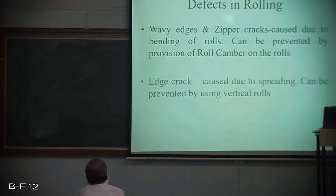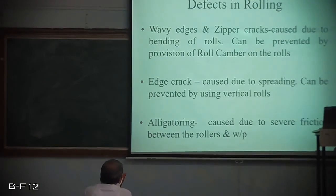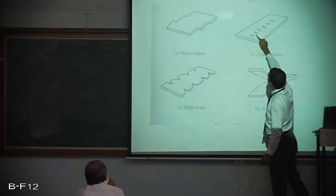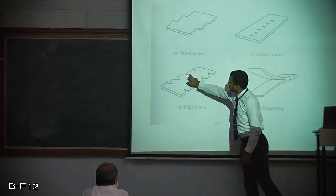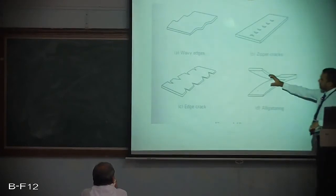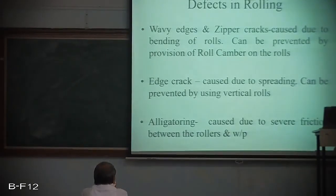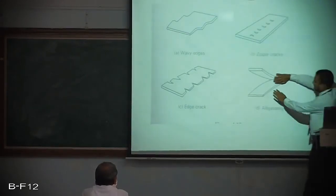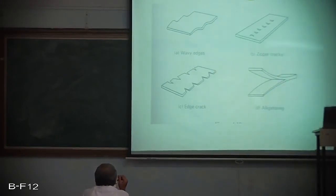Defects in rolling include wavy edges and zipper cracks caused due to bending of rolls. Zipper cracks appear at the center similar to a zip pattern. Edge cracking is also seen, caused due to spreading and can be prevented using vertical rolls. Alligatoring occurs due to severe friction between rollers and workpieces, causing the material to stick to the rollers and open up at the center, somewhat like an alligator mouth.